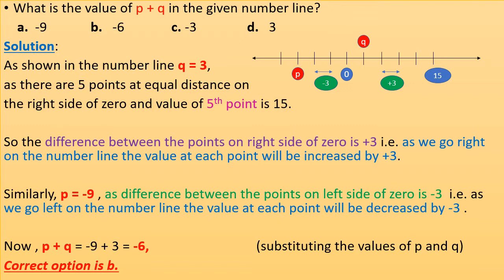In a number line, on the right side of zero the values are always positive, and on the left side of zero the values are negative. As shown in the number line, q equals 3, as there are five points at equal distance on the right side of zero and the value of the fifth point is 15.